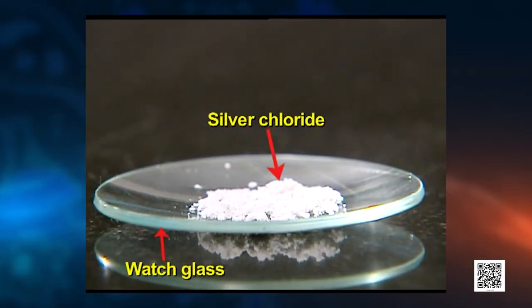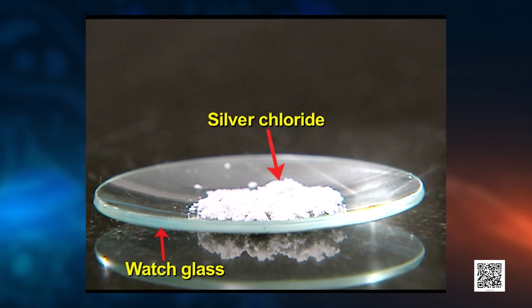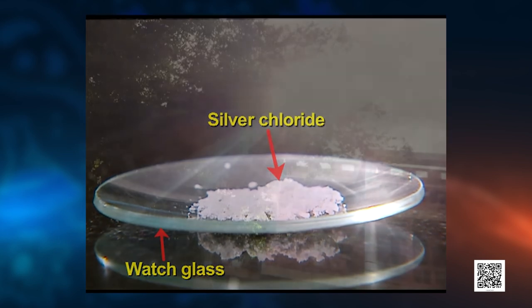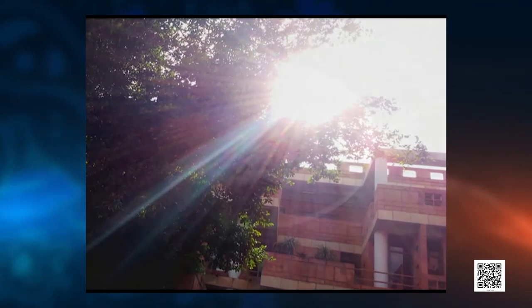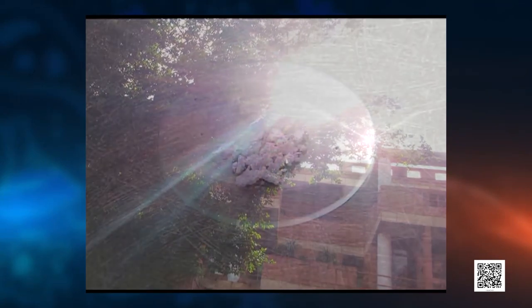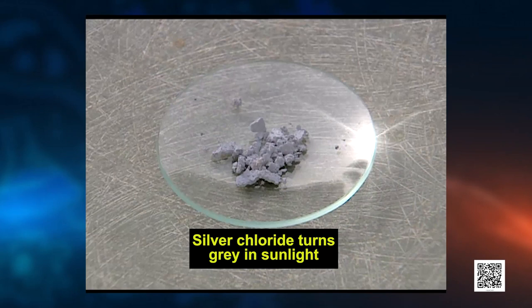Let's learn through this video. We have taken 2 g of silver chloride in a watch glass — its colour was whitish. It is placed in sunlight for some time. After some time, silver chloride turns gray in sunlight to form silver metal.